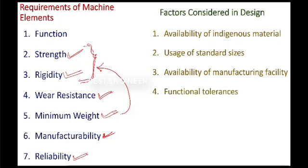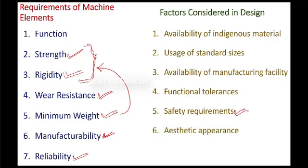Functional tolerance. Tolerance should be minimized. If you maximize the tolerance, rejection will be reduced. Safety requirements. Here sharp corners can be avoided. So, the component handling will be easy. And aesthetic appearance. This is the best and last factor. Because aesthetic appearance will attract the customers. After completing all these steps, final step is aesthetic appearance. We need to concentrate on this aesthetic appearance also.